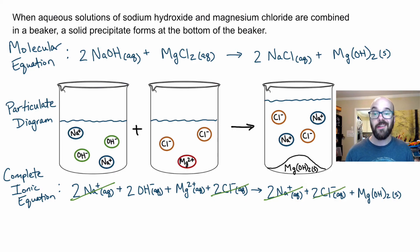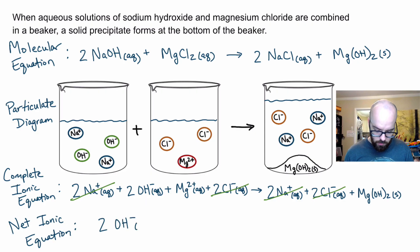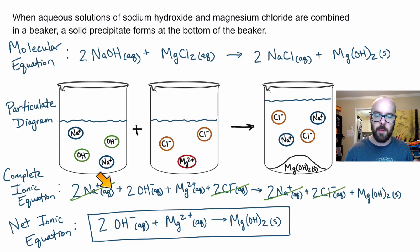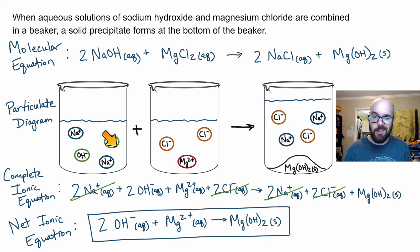Now we treat this like a math equation and cancel anything that appears on both sides. Two sodium ions on the left, two on the right — cancel. Two chloride ions on the left, two on the right — cancel. Those were the spectators; we don't need them in our net ionic equation. What we're left with is: Mg²⁺(aq) + 2 OH⁻(aq) → Mg(OH)₂(s). This is what really happened: the hydroxides bonded with the magnesium and formed solid magnesium hydroxide at the bottom of the beaker.